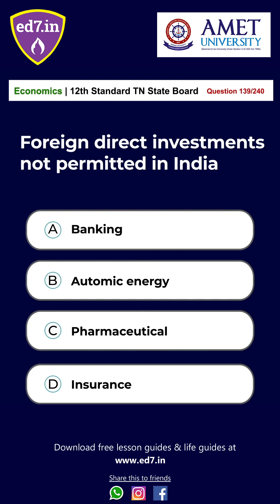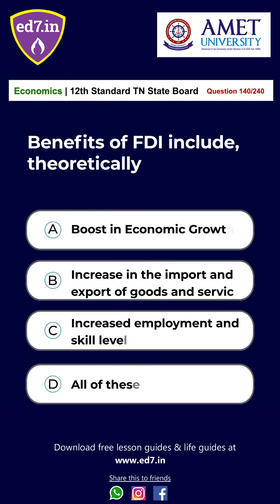Question 139: Foreign direct investment is not permitted in India in — A. Banking, B. Atomic energy, C. Pharmaceutical, D. Insurance. The answer is Option B: Atomic energy. Question 140: Benefits of FDI include — A. Boost of economic growth, B. Increase in import and export of goods and services, C. Increased employment and skill levels, D. All of these. The answer is Option D: All of these.